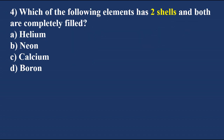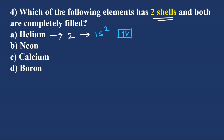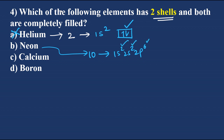Which of the following elements has 2 shells and both are completely filled? Helium has atomic number 2 with configuration 1s² - that is only one shell, so helium is wrong. Neon has atomic number 10 with configuration 1s² 2s² 2p⁶ - total 10 electrons, 2+2+6=10. Neon has total 2 shells: n=1 and n=2.